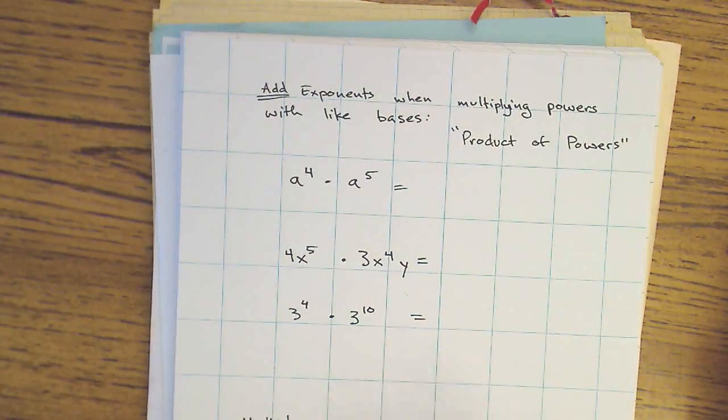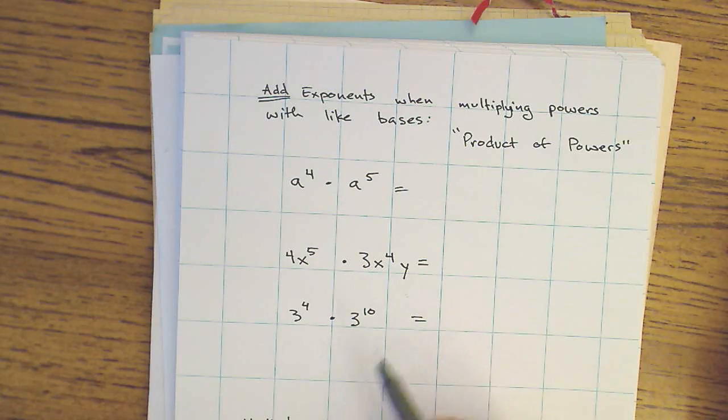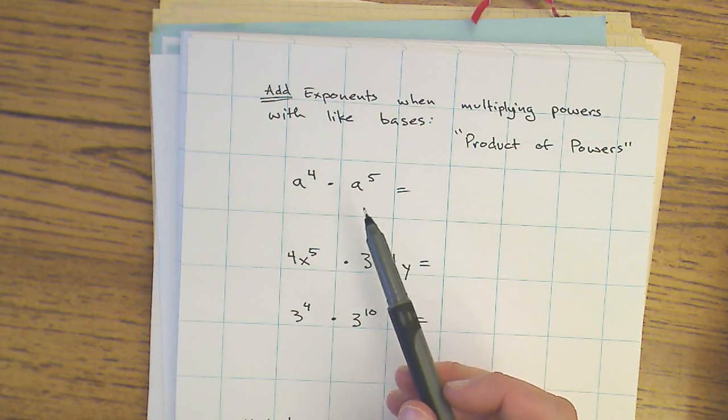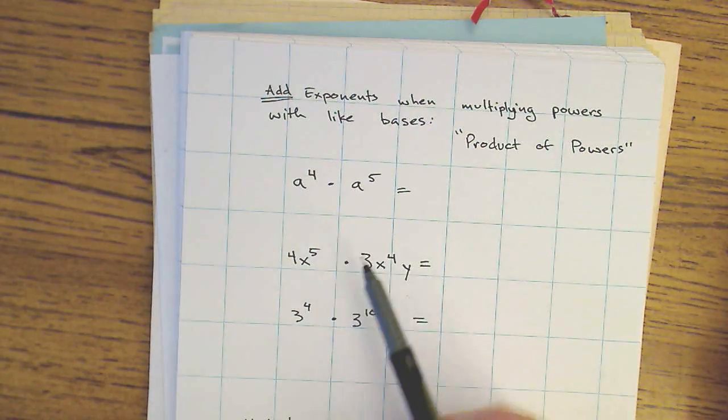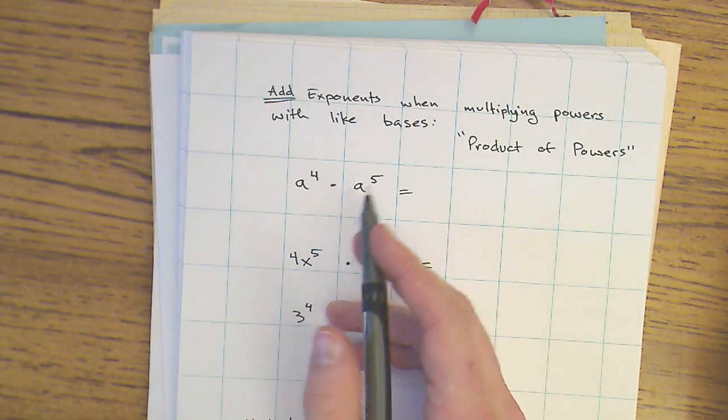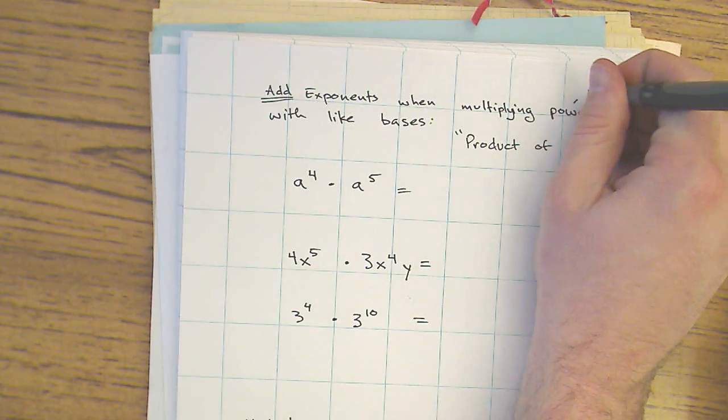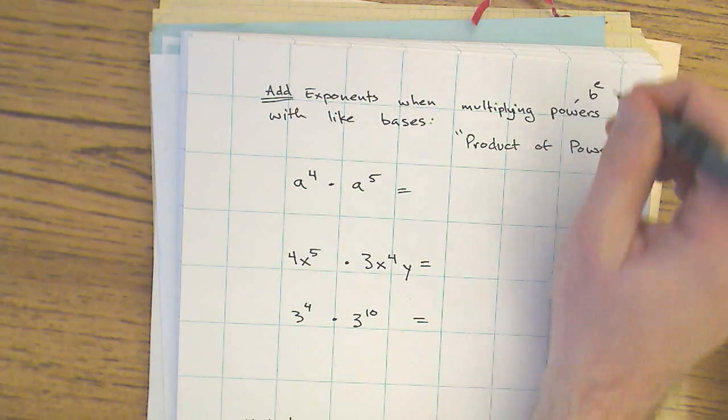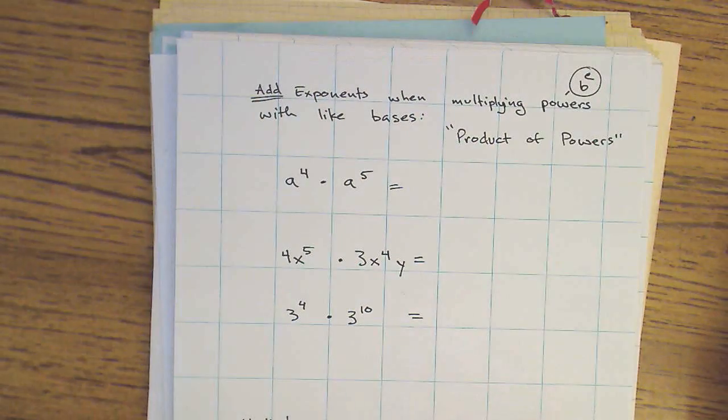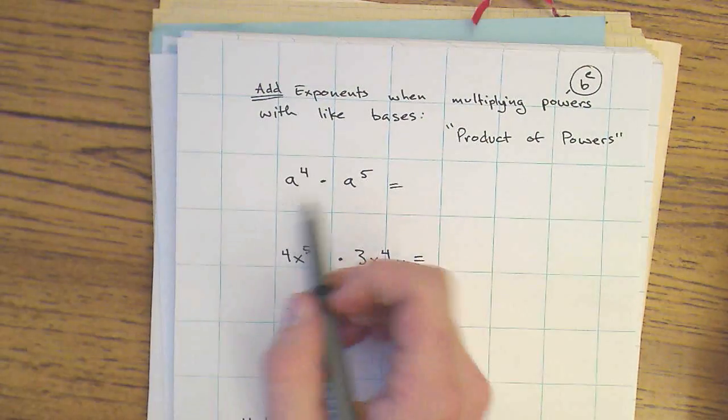Hi guys, this is Mr. Hirschman. I want to just quickly review with you some situations where we would add exponents. So the rule is that we add exponents when we are multiplying powers. A power is just a base and an exponent, so this whole thing is a power, with like bases.